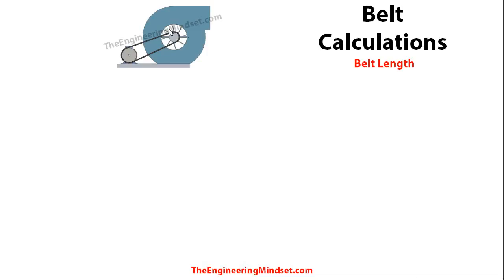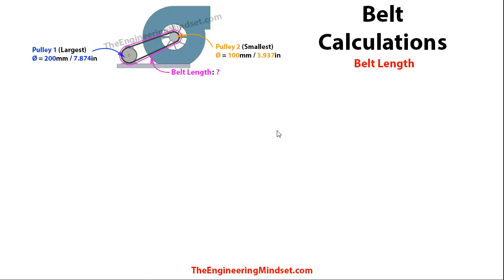First of all we'll look at the belt length — what length does this belt need to be? In this example we're looking at the belt between the induction motor and a centrifugal fan in an AHU. We already know the size of each pulley, either from manufacturer's data or by measuring on site. Pulley one is always the largest pulley, and we also know the center distance between the two pulleys.